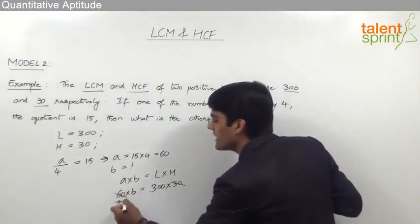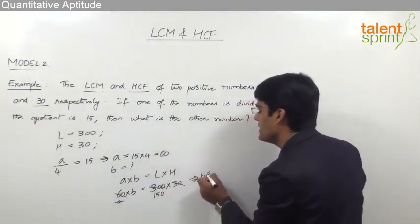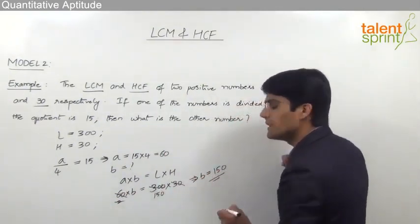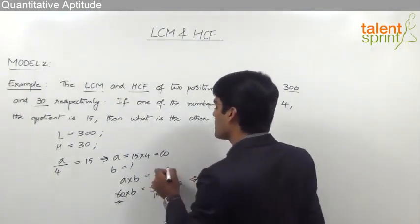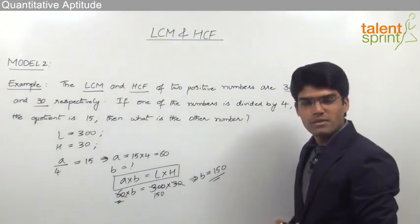So 30 gets cancelled two times and 2 here goes 150 times. So we can say that the other number B is equal to 150. So this is how we can use the property A into B equals to L into H to solve such questions.